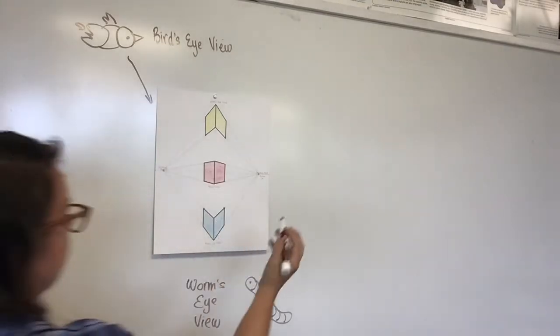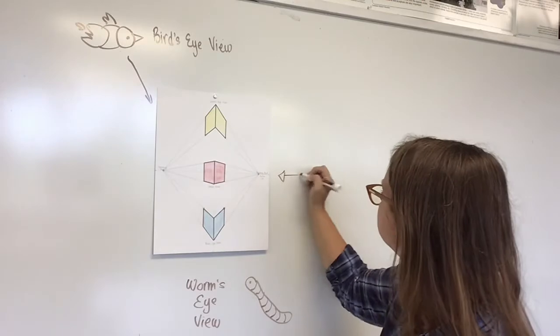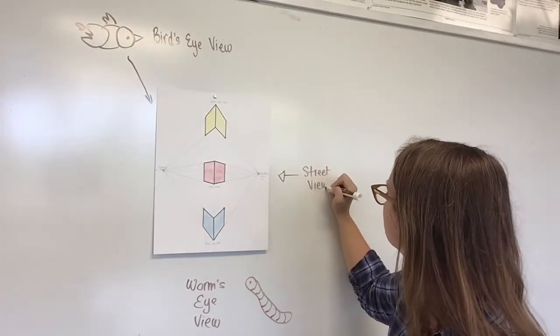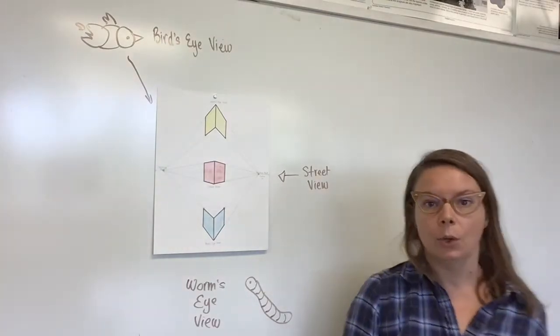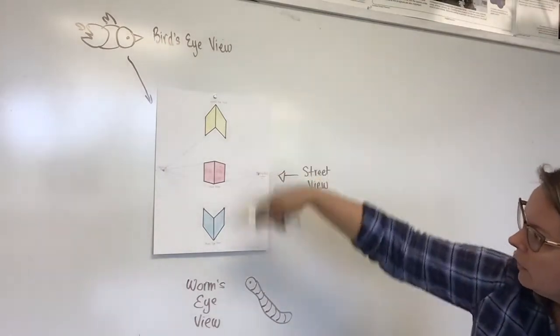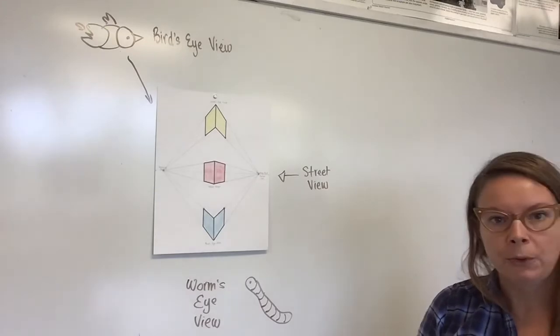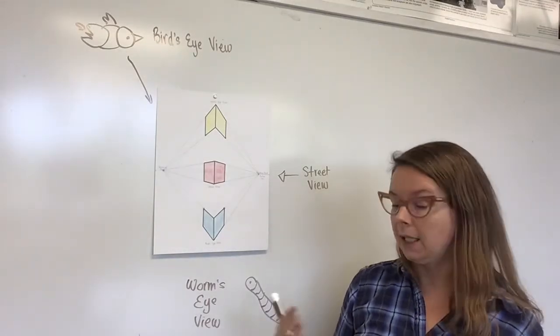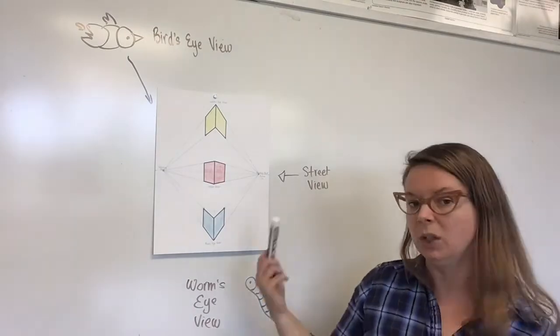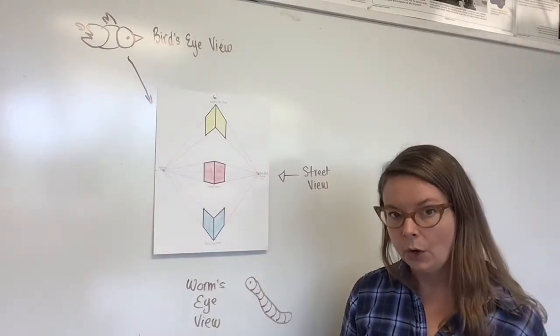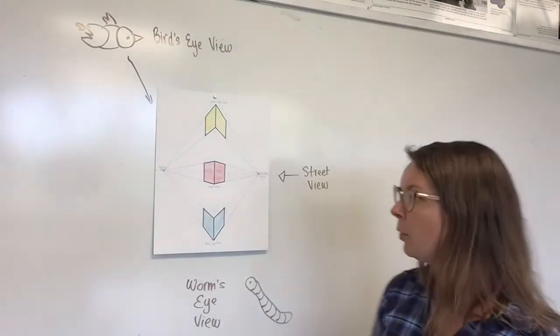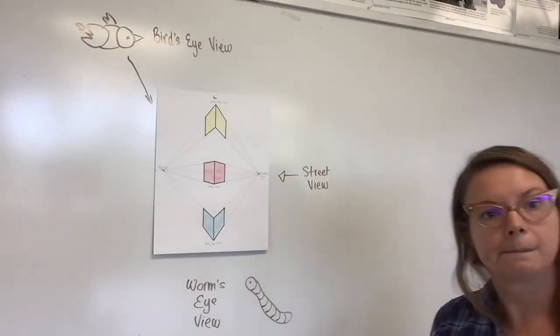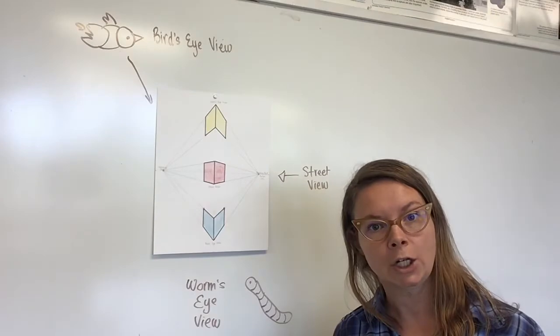And then this again right here, just your basic street view. So once you have these three views down with two-point perspective, you can pretty much create any scene that you would like with buildings, boxes, what have you, in perfect two-point perspective. So we're going to learn how to do this today. So let's get started.